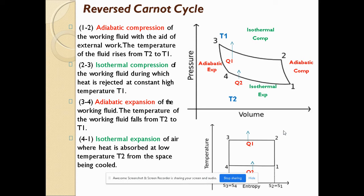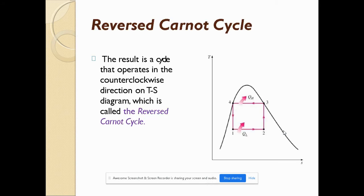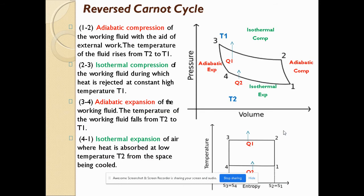The last process, 4 to 1, is isothermal expansion where heat is absorbed at temperature T1, denoted as Q2. Heat absorption is denoted as Q2 and heat rejected is denoted as Q1. The graph obtained from this cycle operates in a reverse, counterclockwise direction compared to the normal Carnot cycle, and this is known as the reverse Carnot cycle.